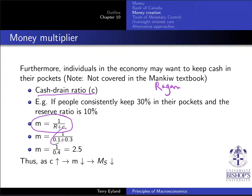If we take that ten percent reserve ratio situation and add the cash drain ratio, it makes the denominator bigger, meaning the money multiplier will be smaller. As more money is kept as cash and not deposited in the banking system, there are less reserves and fewer loans possible — therefore less money created in the whole process.